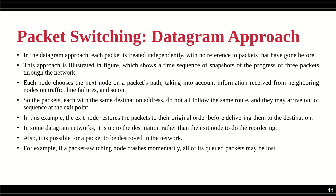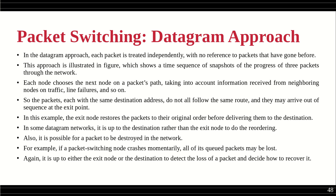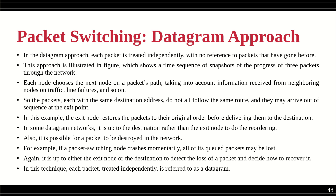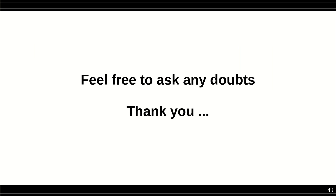In some datagram networks it is up to the destination machine rather than the exit node to do the reordering — this varies by network. It is also possible for a packet to be destroyed on the way; for example, if a packet switching node crashes momentarily, all of its queued packets will be lost. It is then up to either the exit node or the destination node to detect the loss and decide how to recover. In this technique, each independently treated packet is referred to as a datagram and the whole process is called datagram switching. We will see the virtual circuit approach in the next part.